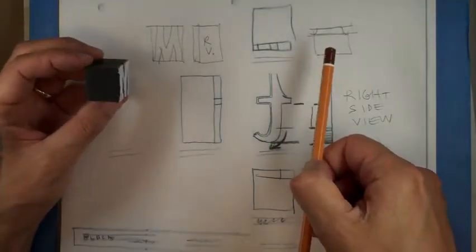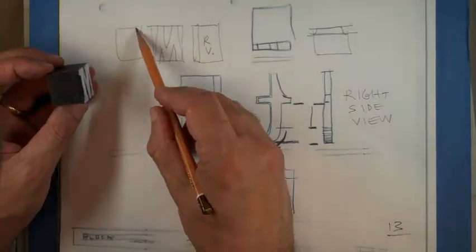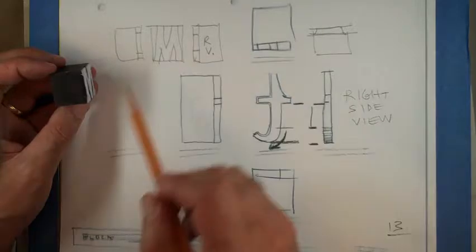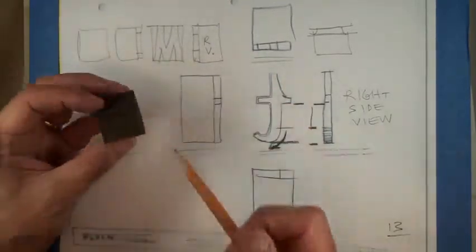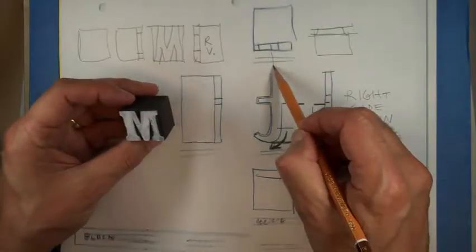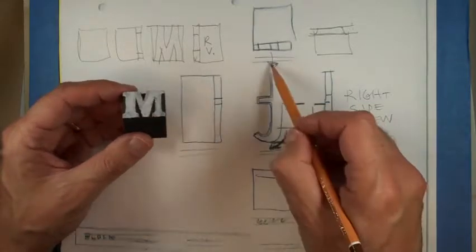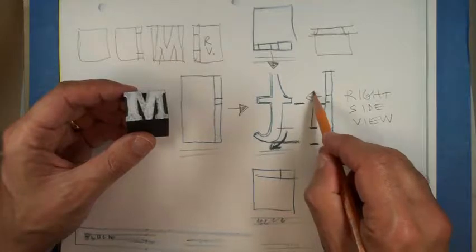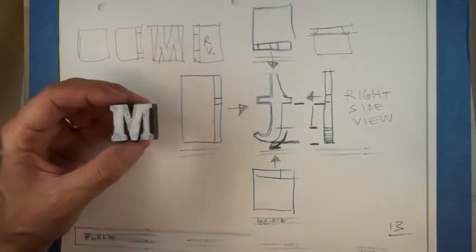And so the left view would be, again, the opposite, which might have different features here depending on what your letter looks like, you know, maybe there is something else. And then the back is pretty simple. That's just the back part. So you can see all the parts that are actually the letter form are kind of in the drawing are kind of facing towards the center.